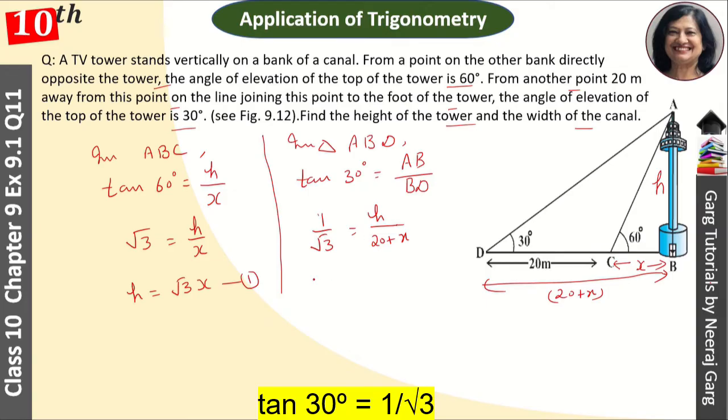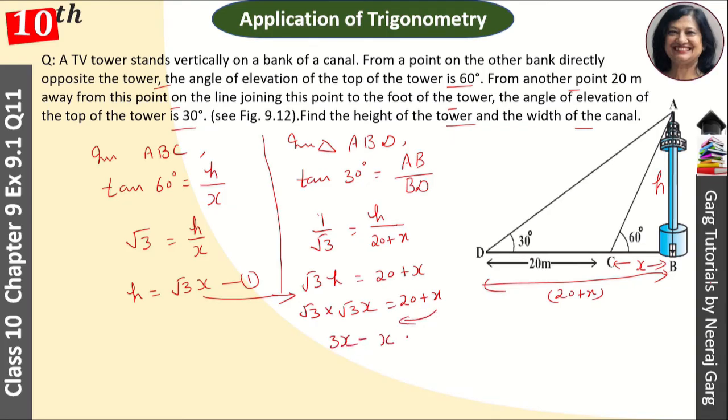Cross multiply, so we have √3H = 20 + X. From the first equation, H = √3X. We put it here, so √3 × √3X = 20 + X. 3X - X = 20, so 2X = 20, and X = 10 meters.